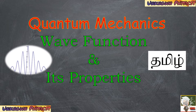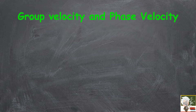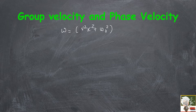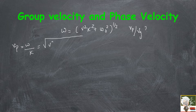In the last video, we discussed a problem and its solution. So in this video, we will discuss the wave function. Phase velocity vp is omega by k. It will be the square root of v²k² plus ω₀² divided by k, and then vg will be dω/dk.